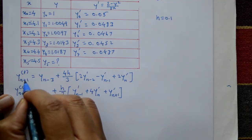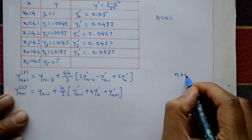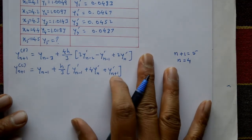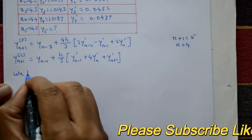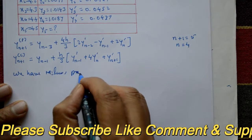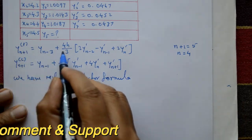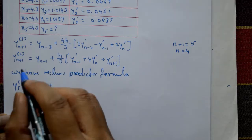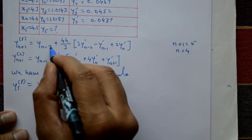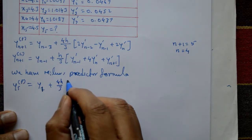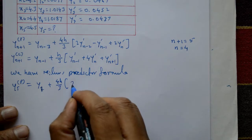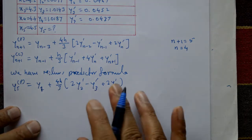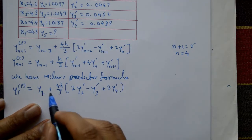In the predictor formula, y(n+1) = y5, so n+1 = 5 and n = 4. Using the predictor formula with n = 4: y5_p = y1 + (4h/3)(2y2' - y3' + 2y4'). Here, 4+1 = 5, 4-3 = 1, and we substitute the known derivative values y2', y3', y4', and y1.